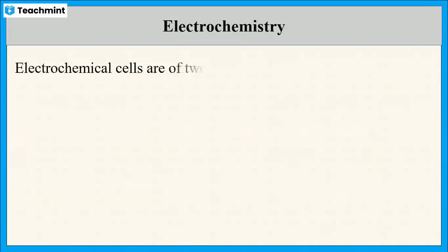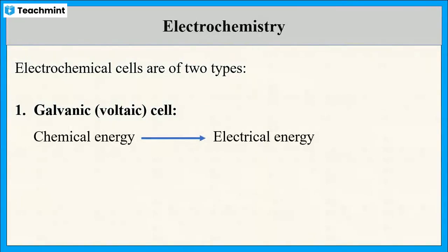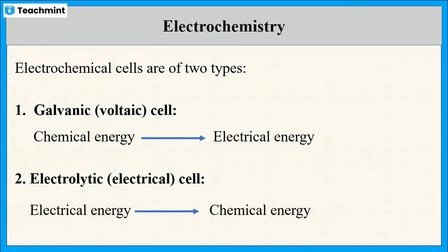There are two types of electrochemical cells. One is the galvanic cell, also called the voltaic cell, and the other is the electrolytic cell. The galvanic cell deals with the conversion of chemical energy into electrical energy, while the electrolytic cell converts electrical energy into chemical energy.